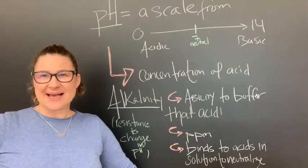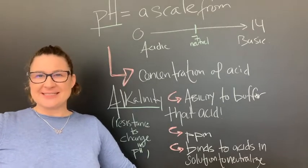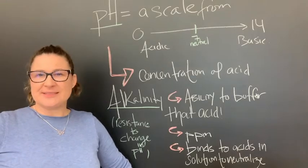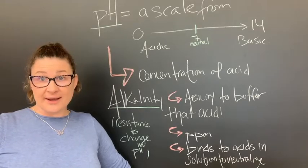So pH is a measurement of acid concentration and it's measured on a scale of 0 to 14, 7 being neutral, 0 being very acidic and 14 being very basic which is also known as alkaline.